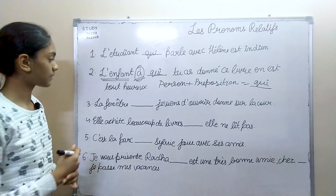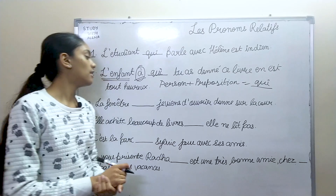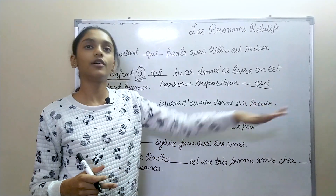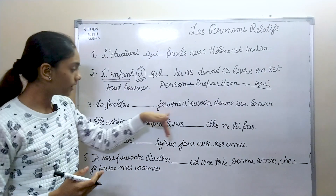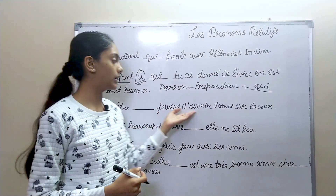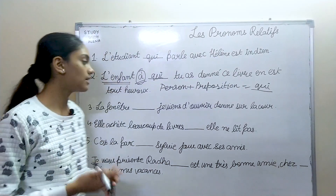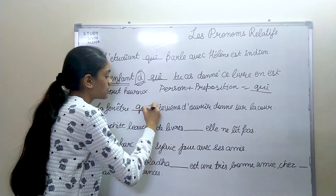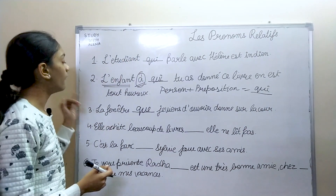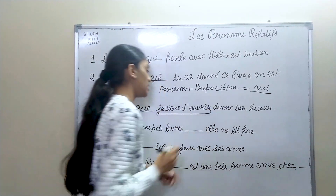Third: "La fenêtre ___ je viens d'ouvrir donne sur la cour." The sentence is "Je viens d'ouvrir la fenêtre dans la cour" — la fenêtre cannot be the subject here, it is the object. So we use que. The answer is: "La fenêtre que je viens d'ouvrir donne sur la cour" — the window that I just opened gives a view of the courtyard.